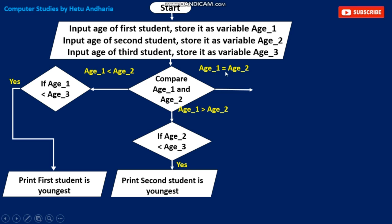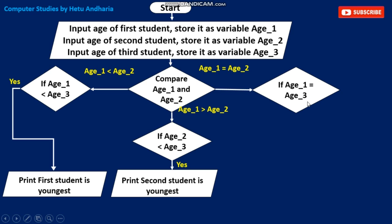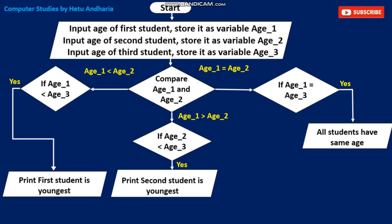Possibility 3: age1 and age2 are equal. Then we can compare either age1 or age2 with age3. For example if both are 10, we compare that 10 with age3. If age1 and age3 are also equal, then all three students have the same age — we print: All students have the same age.